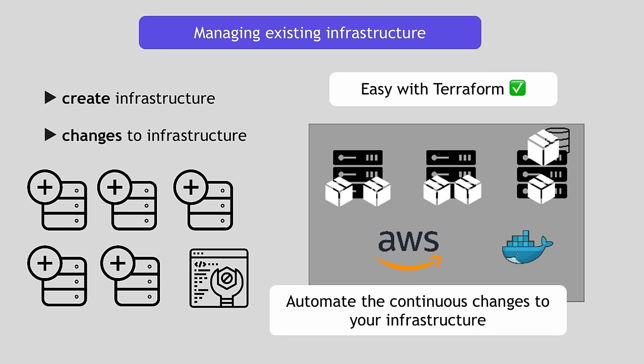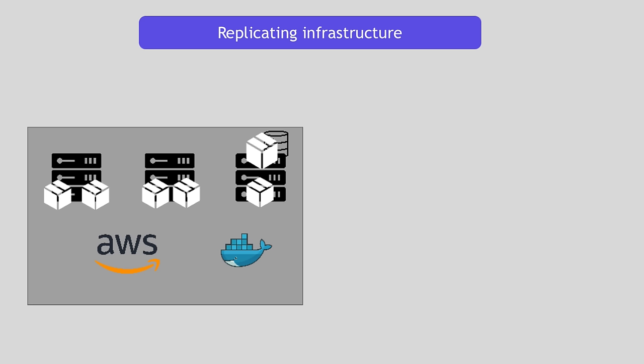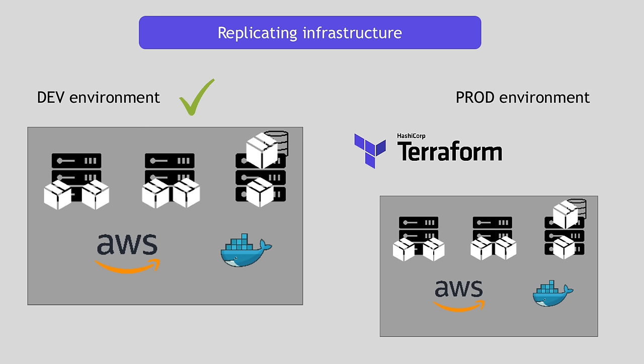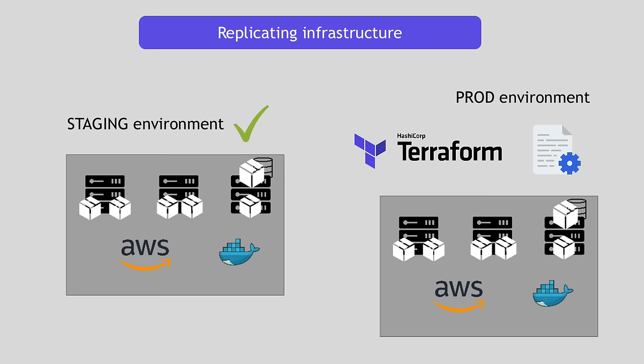Once you are set up with Terraform to create and maintain your infrastructure, another common use case is replicating that infrastructure. Let's say after testing your setup and everything works fine, you decide to release your application in a production environment — creating a production environment that replicates the exact setup and keeping the first as a development environment where you can test new features and updates before launching to production. You can use Terraform to automate that process and easily spin up an identical staging environment as well using the same Terraform code.